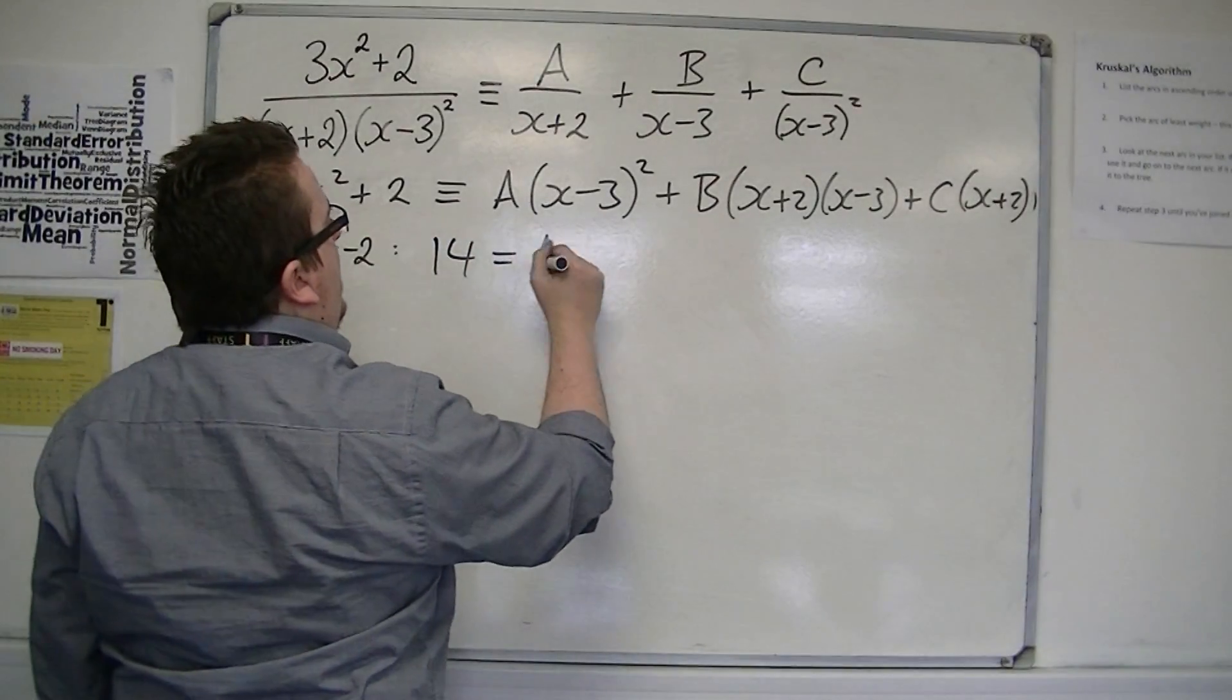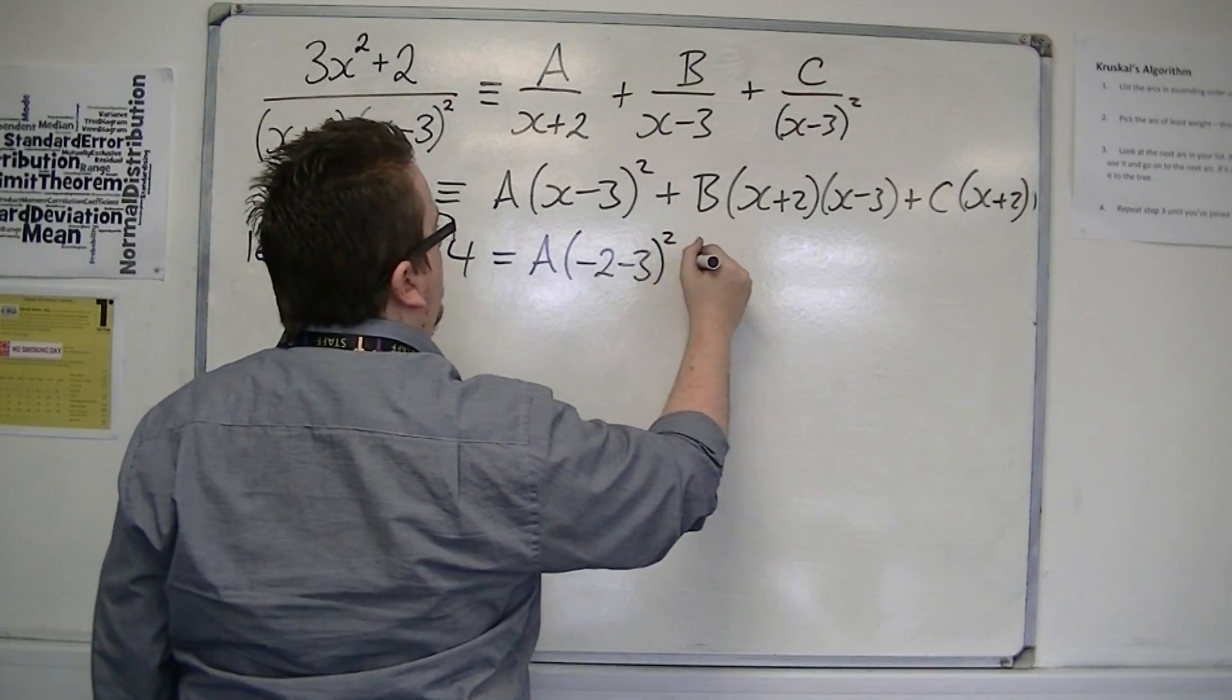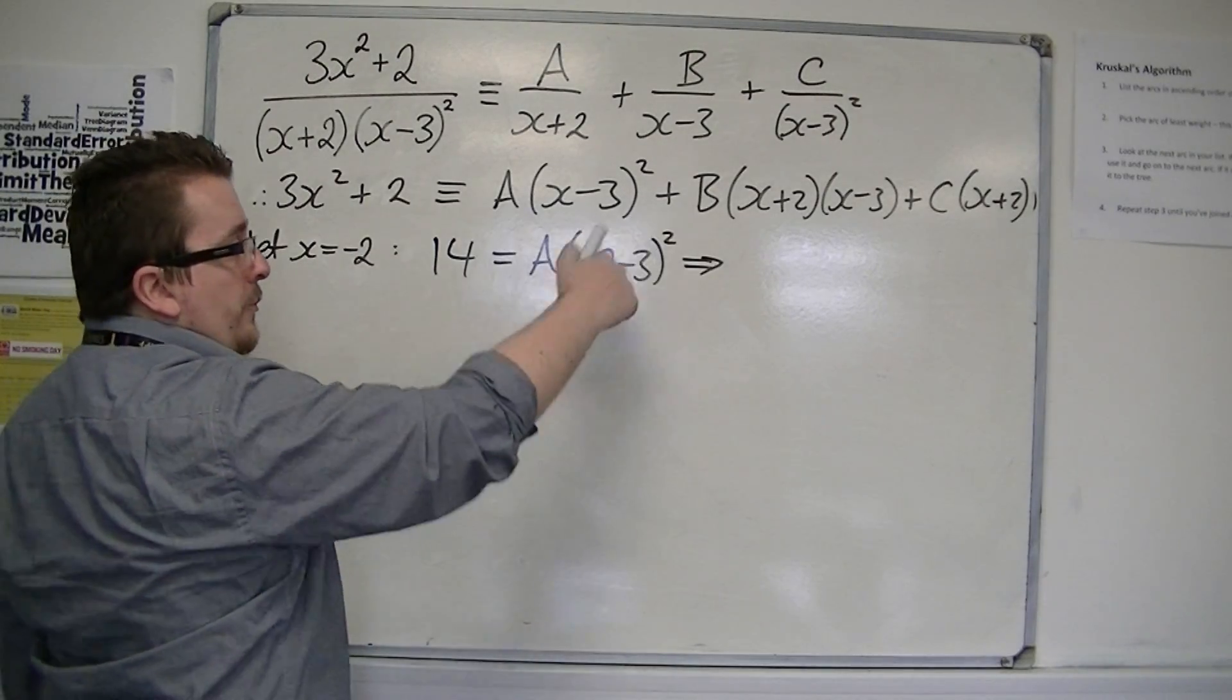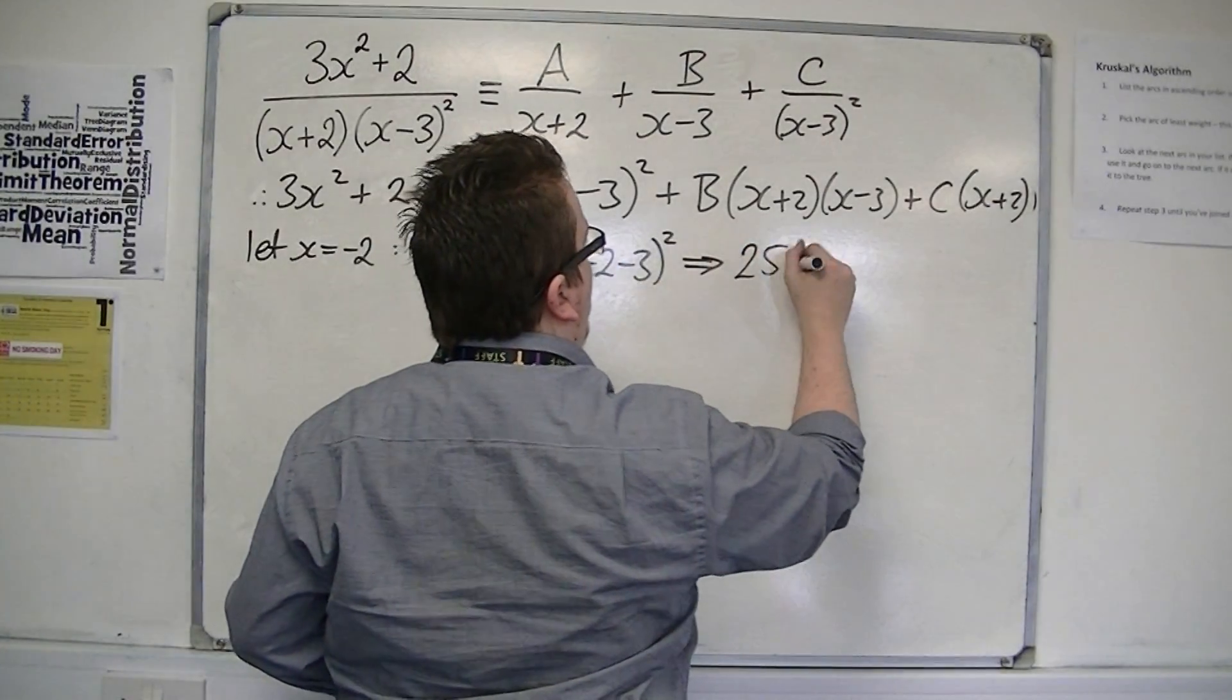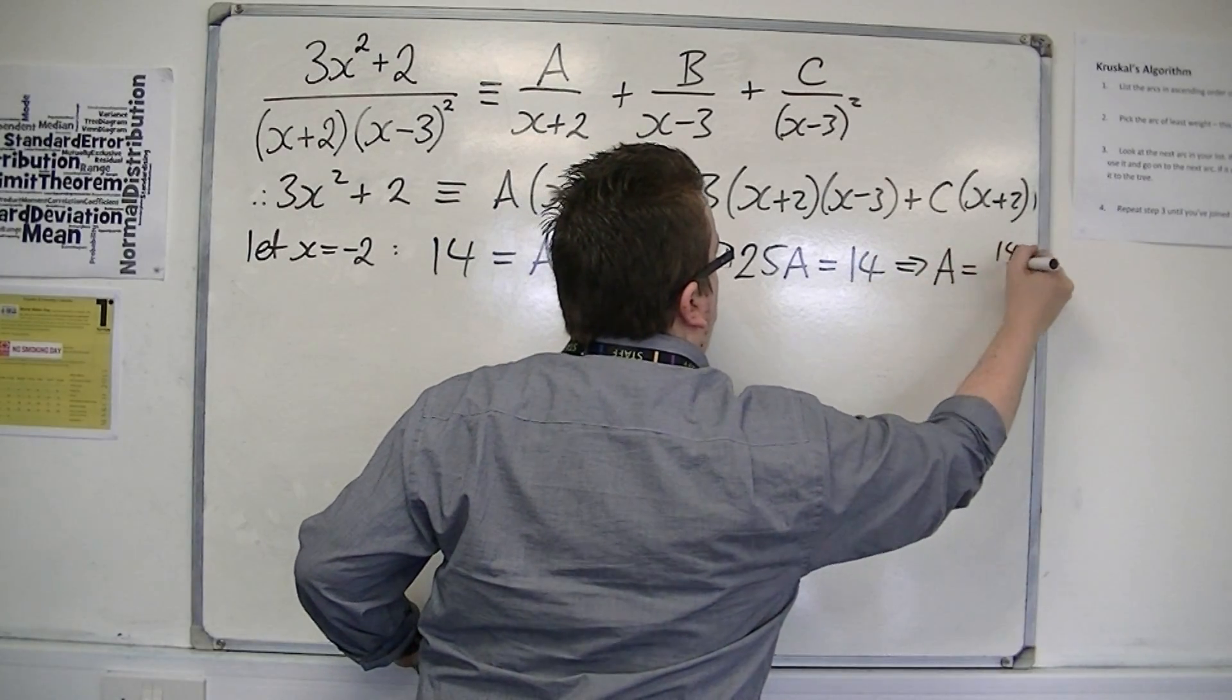It's going to be equal to A times minus 2 minus 3 squared. So, minus 2 minus 3 is minus 5, minus 5 squared is 25, so 25A is 14, so A is 14 twenty-fifths.